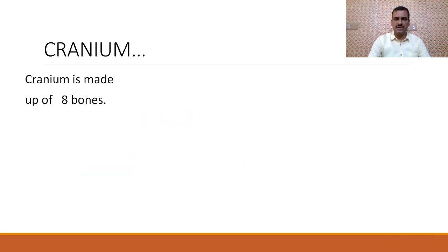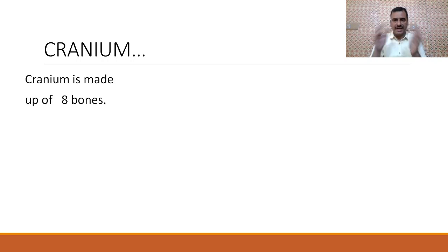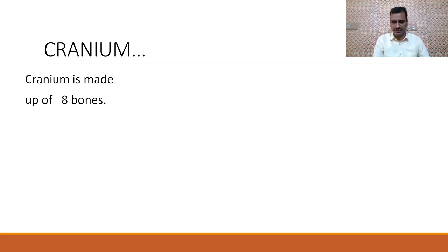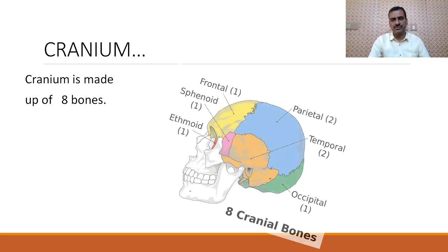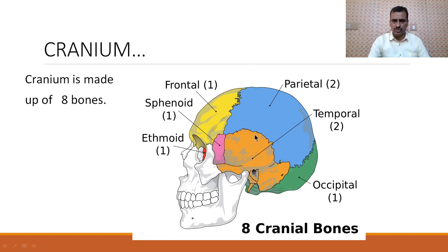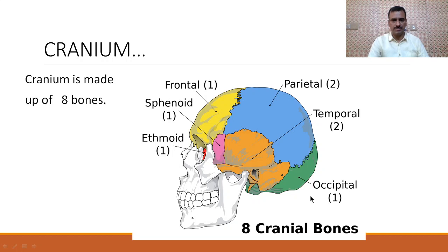First of all, cranium. Cranium is made up of eight bones. Cranium is a cavity in which the brain lies safely. You can see in this picture that these bones cover the brain and form the cranium. The eight bones of the cranium are frontal, parietal, temporal, occipital, sphenoid, and ethmoid. We will discuss them one by one.